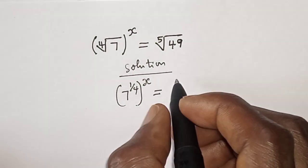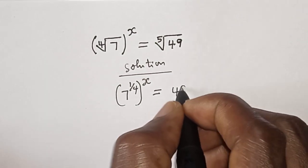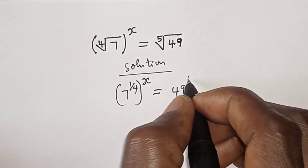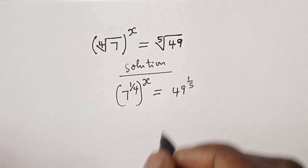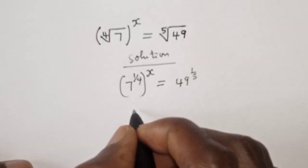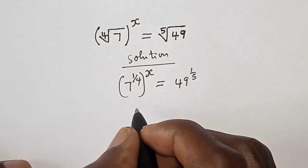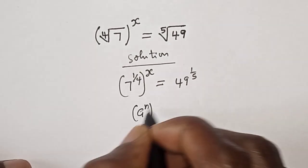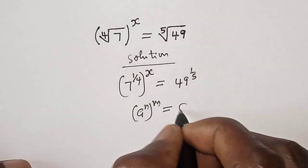This is equal to fifth root of 49, which can be written as 49 raised to power 1 over 5. Then we have, remember this exponential rule: a raised to power n to the power of m is equal to a raised to power n times m.